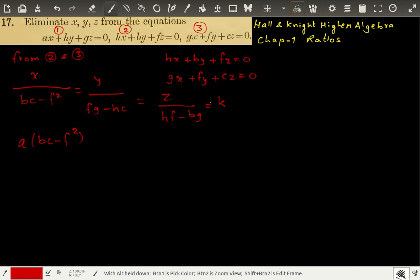Anyway, I will not write k because k will occur in each of these y and z and it will eventually cancel out. So, a times bc minus f squared plus h times y, h times fg minus hc, plus g times z which is hf minus bg is equal to 0.